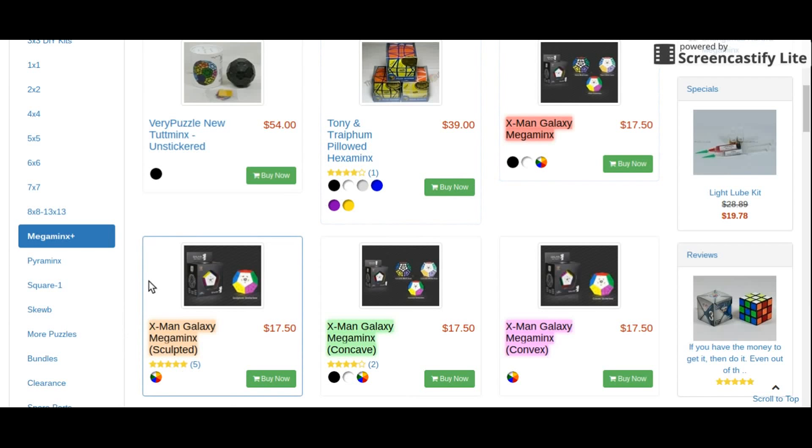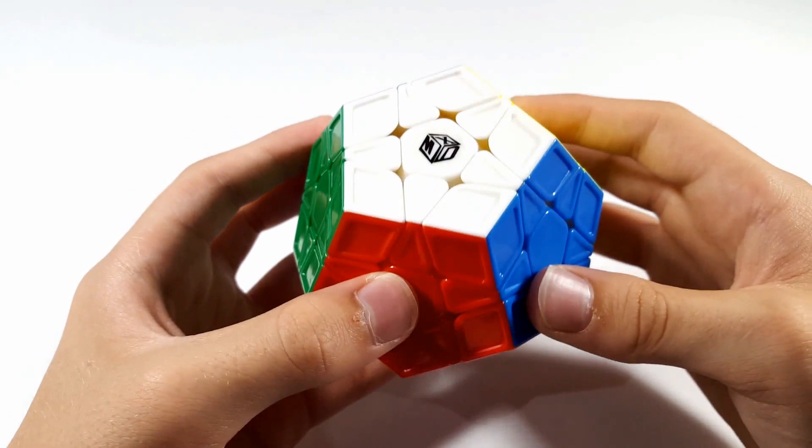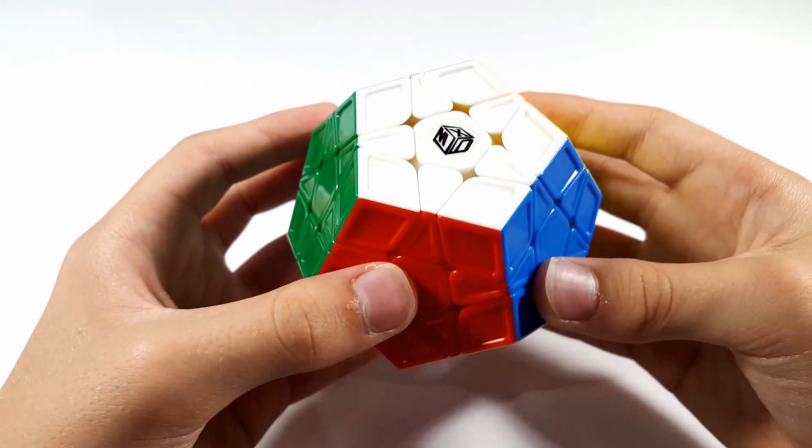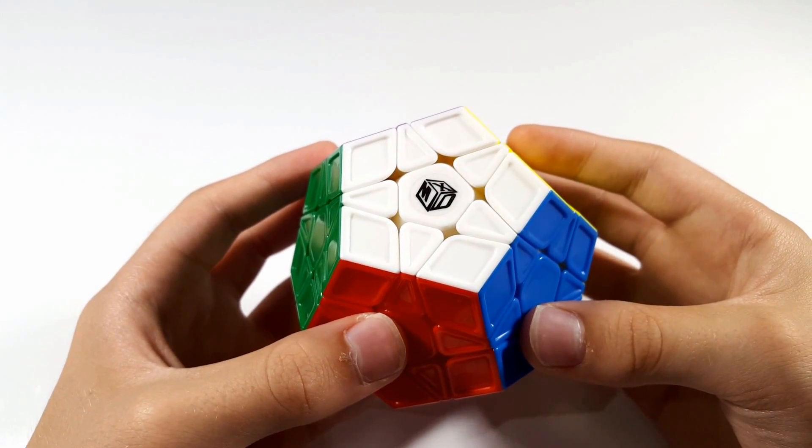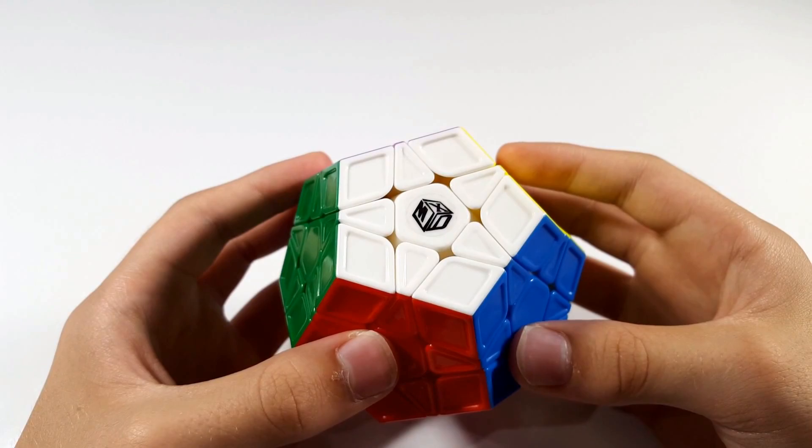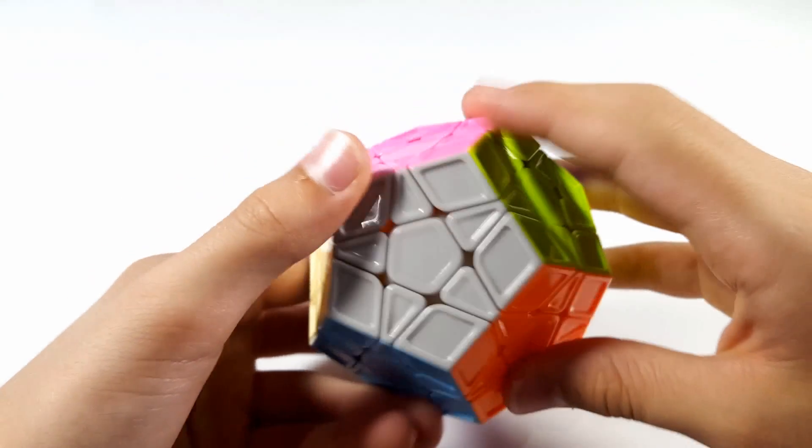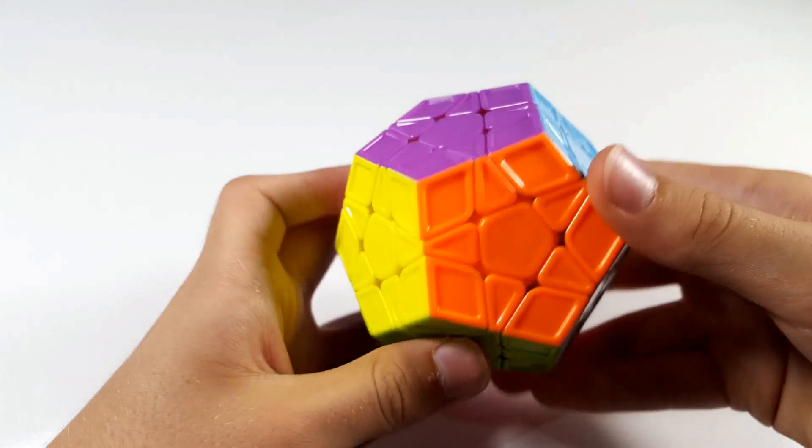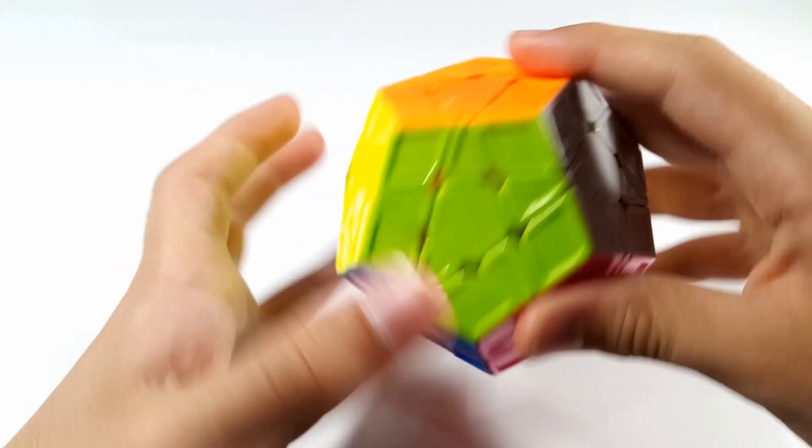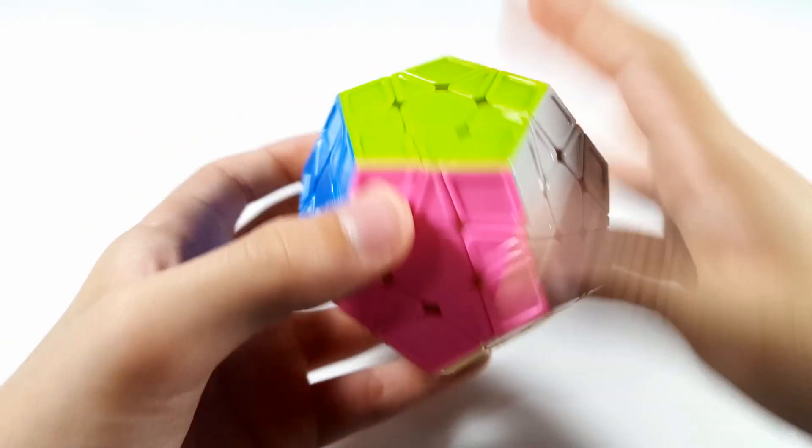But before talking about performance, I think it's important to point out that there are four different versions of this puzzle: the standard version, sculpted version, concave version, and convex version. I personally have the sculpted version, which is considered to be the best of the four. However, it only comes in stickerless. As for the price, all four versions come in at $17.50 to $17 at most cube stores, and the stickerless shades on this cube are actually quite nice and vibrant.